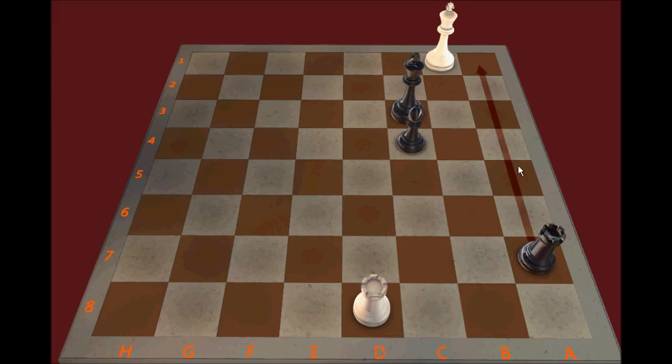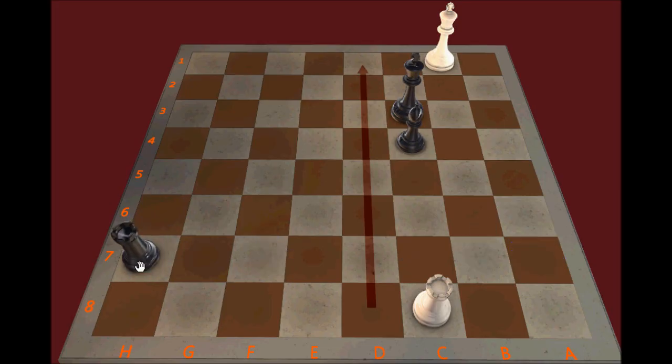Black can keep the Rook on the a file and now threatens Bishop to d3 check, followed by Rook to a1 mate. So White's only option is to pin the Bishop. And now, with the Rook no longer controlling the d file, Black can go ahead with this.